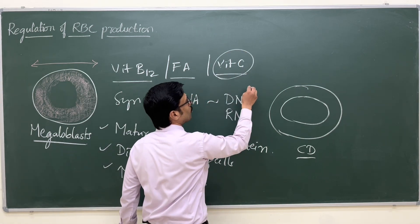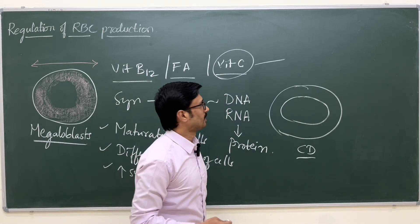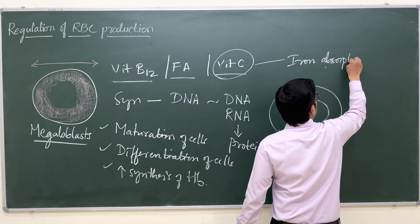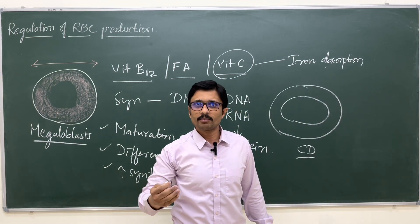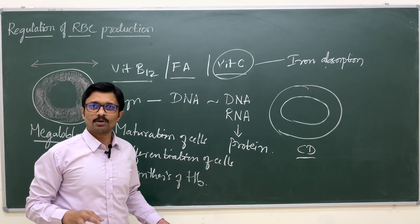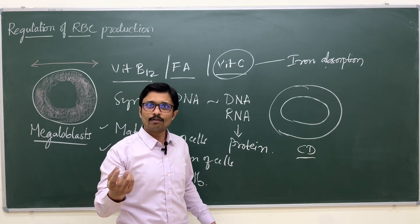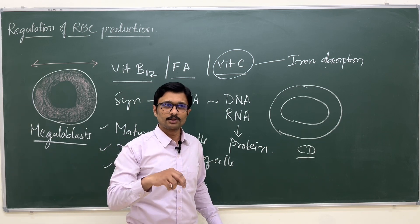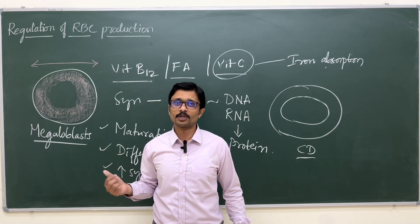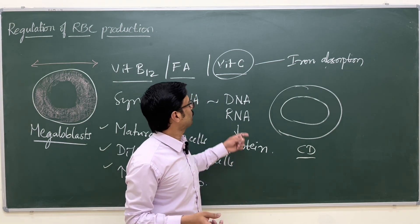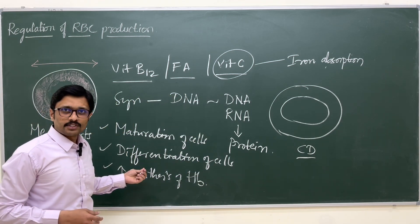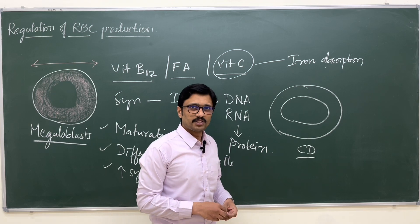Vitamin C also plays a role in iron absorption from intestinal epithelial cells. If vitamin C is deficient, cell maturation is not happening and an adequate amount of iron from the intestine will not be absorbed. With less iron in circulation, less iron reaches the bone marrow, and hemoglobin synthesis is reduced. So the role of vitamin C is both cell maturation and iron absorption from intestinal epithelial cells.